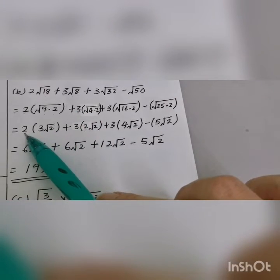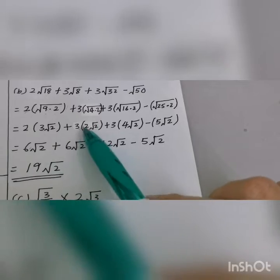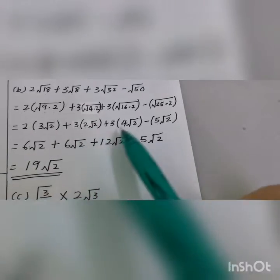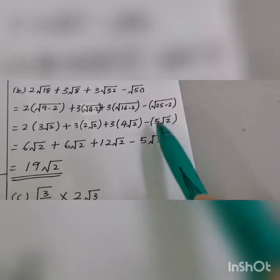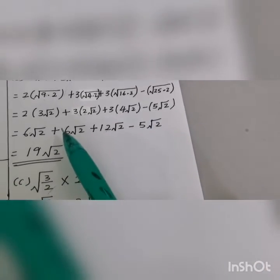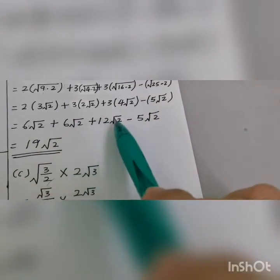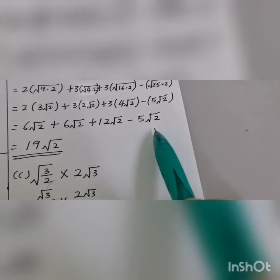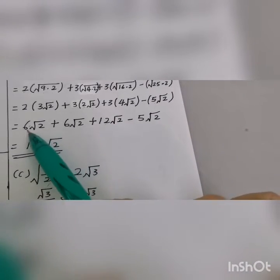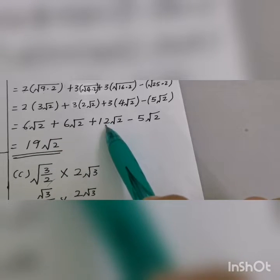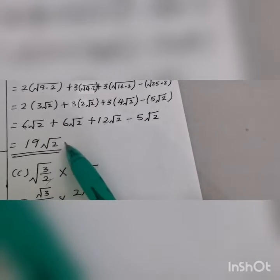Now multiply the numbers outside: 2 times 3 is 6, 3 times 2 is 6, and the other becomes 12. Make sure they are all like terms — yes, they are all square root of 2. So add: 6 plus 6 plus 12 minus 5, and that gives the final answer.